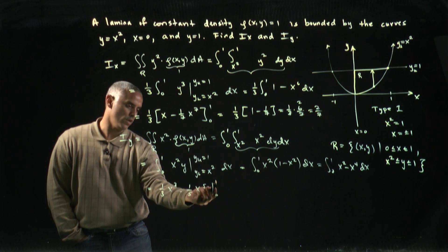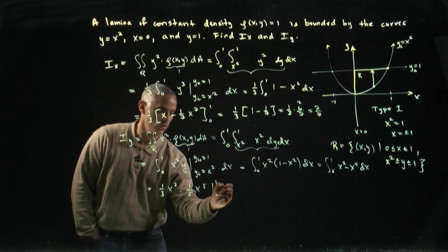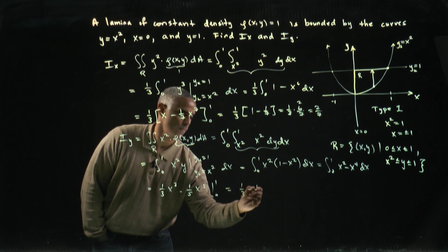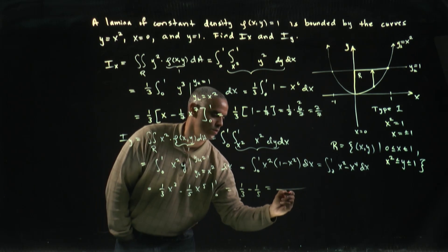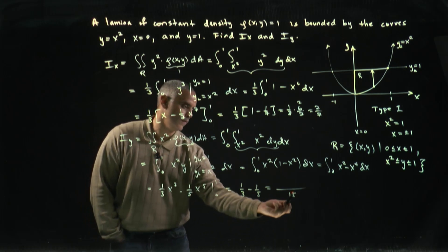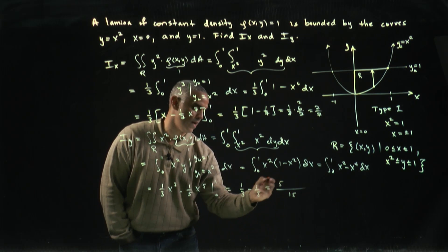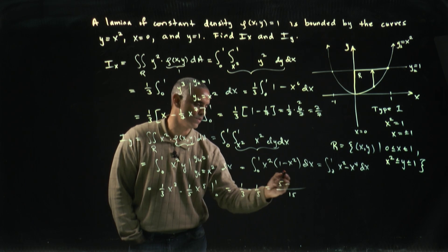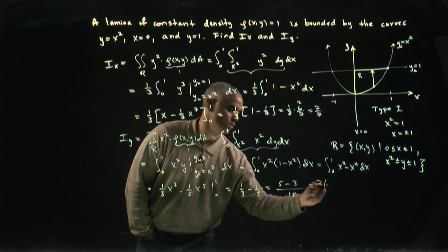Again, survival at the upper limit and vanishes at the lower, so we get a third minus a fifth, which is so many fifteenths. Three goes into fifteen five times, five times one is five, minus five goes into fifteen three times, three times one is three, I get two fifteenths.